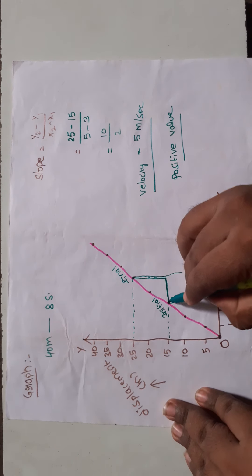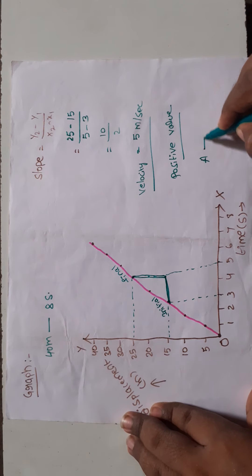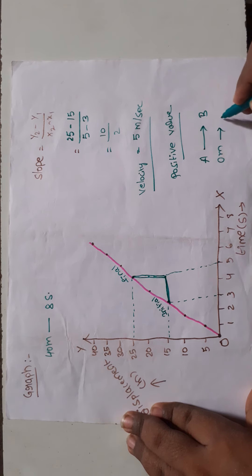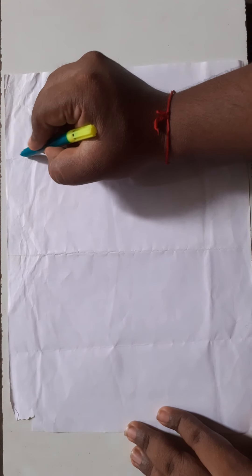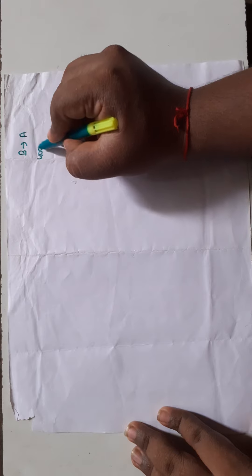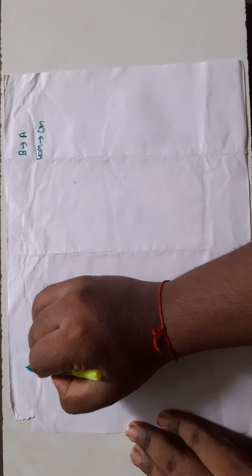From the slope we can easily calculate the velocity of the object between any two points. Here the object traveled from position A to B, that is 0 meters to 40 meters, giving a positive value. Now consider the same car traveling from position B to A — meaning from 40 meters back to 0 meters — so the object is traveling in the opposite direction.